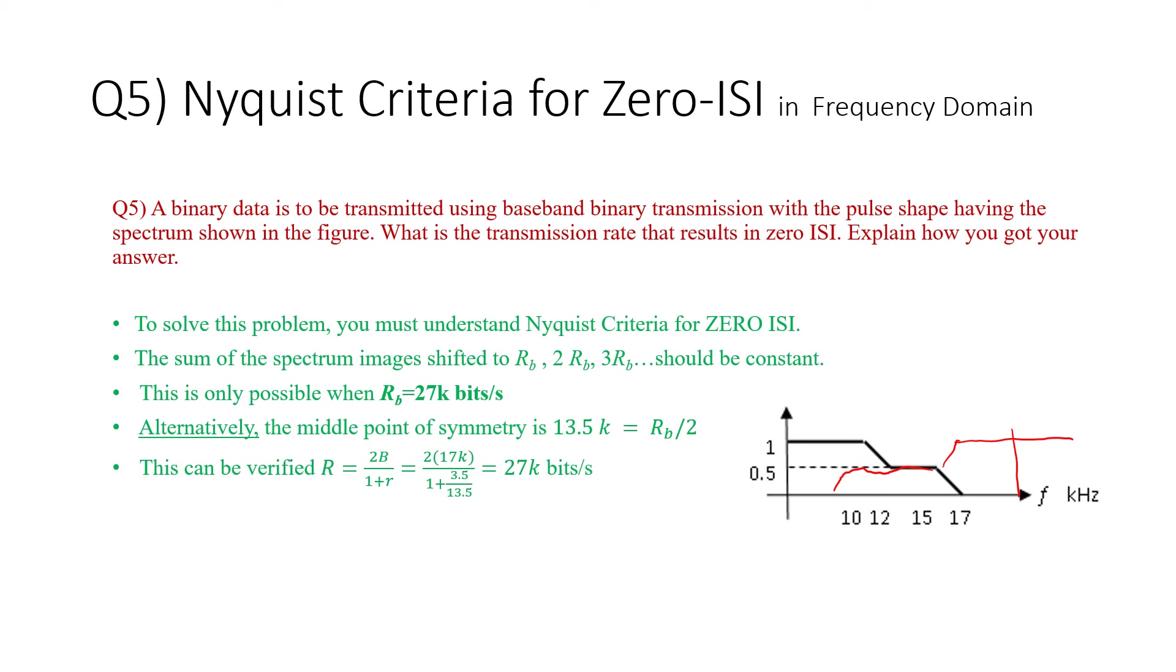Alternatively, you want this point in the middle between 10 and 17 to satisfy the following condition. It should be RB over two, and of course that will give you RB over two is 13.5. This is 13.5 kHz that must be RB over two, which means that RB should be 27 kilobits per second. I'll leave you with this to think about, or you can watch the videos where we explain this in more detail. The objective here is just to share some questions and challenge your understanding.